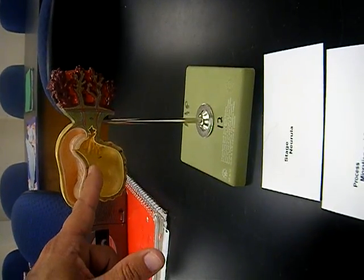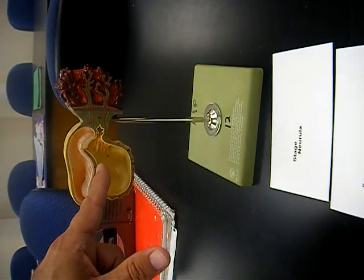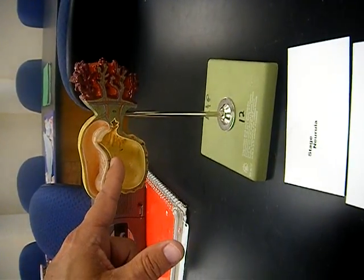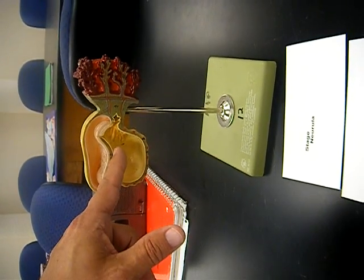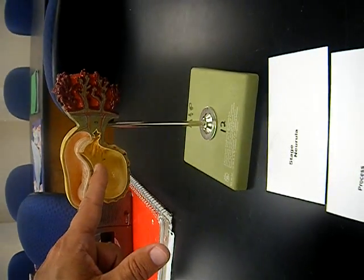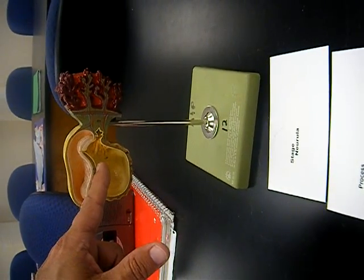Then I want the brown mesoderm, which becomes your muscles and bone, and this thin yellow is endoderm, which is my inner cell lining, or sorry, inner linings.